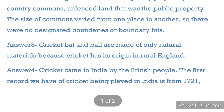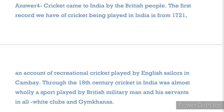Question 3: Why are cricket bat and ball made of only natural materials? Answer: Cricket bat and ball are made of only natural materials because cricket has its origins in rural England. Question 4: How did cricket come to India? Answer: Cricket came to India with the British. The first record of cricket being played in India is from 1721, an account of recreational cricket played by English sailors in Khambhat. Through the 18th century, cricket in India was almost wholly played by British military men and civil servants in all-white clubs and gymkhanas.